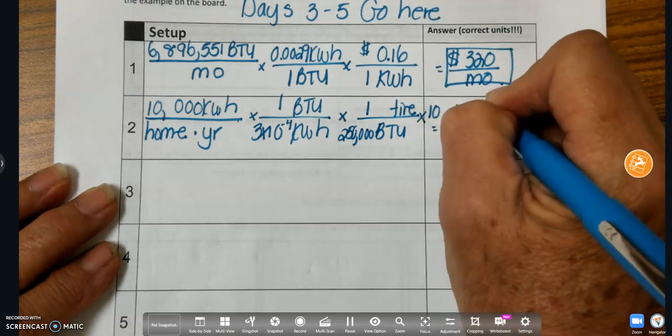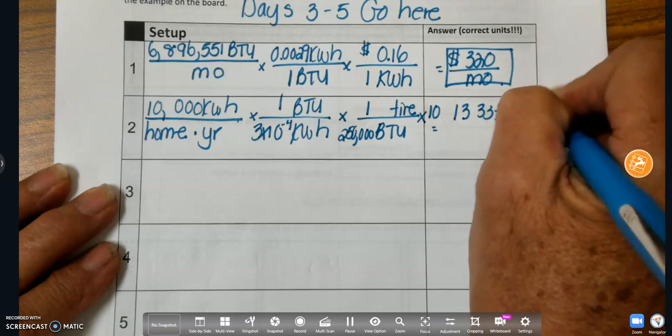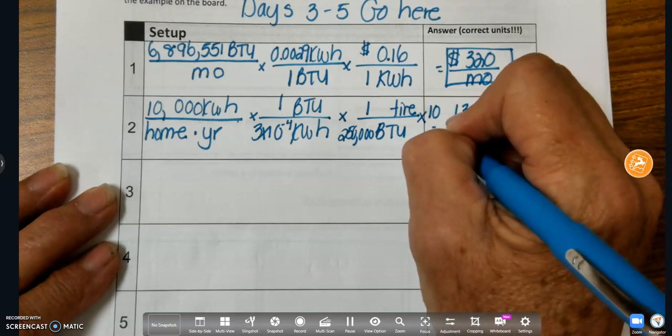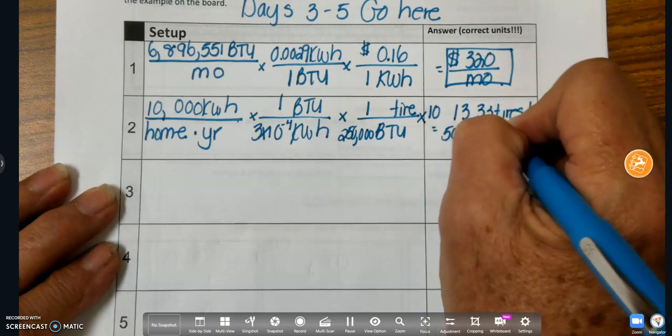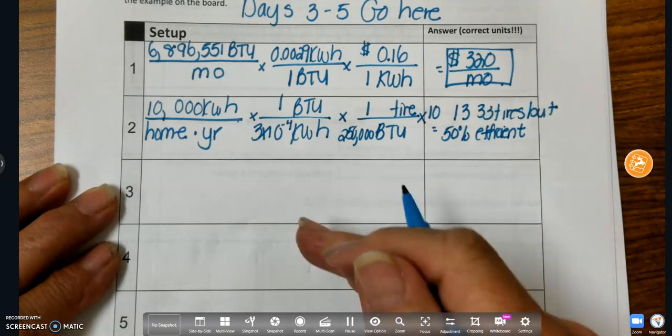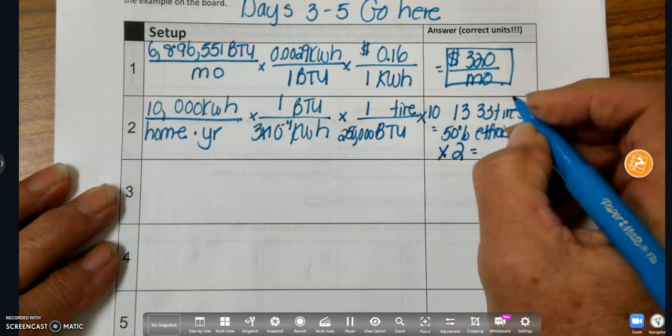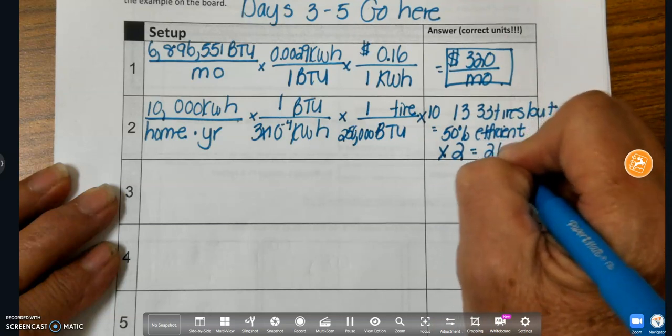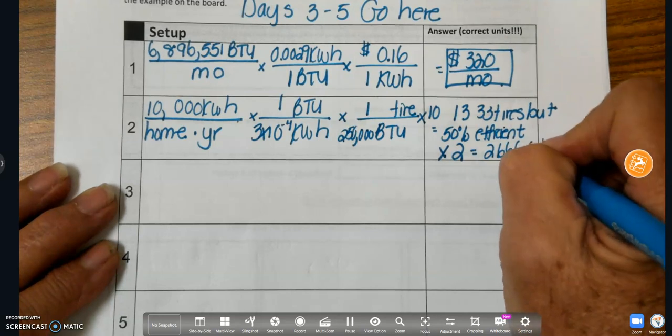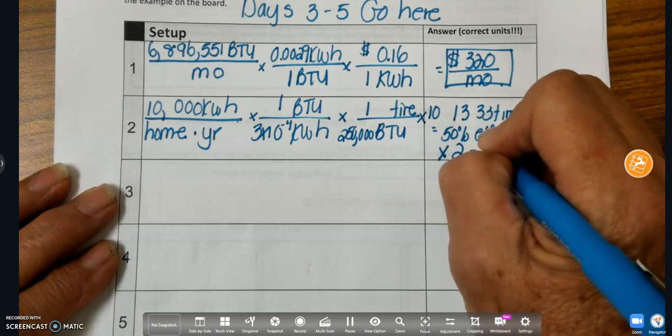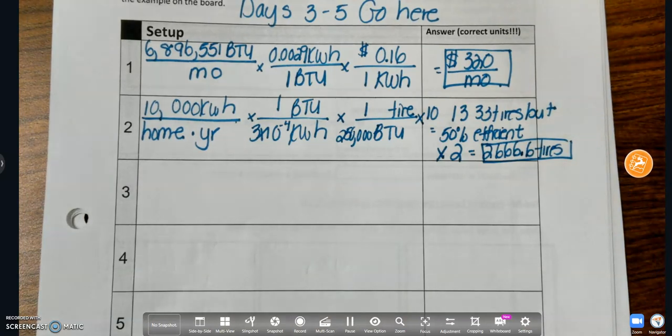But 50% efficient, so I'm only getting half back. I've got to put in another half, or multiply this by 2 to get 100% efficiency. I've got to burn more tires, because I'm losing half of it to heat or something else. I'm only getting half as efficient electrical energy.